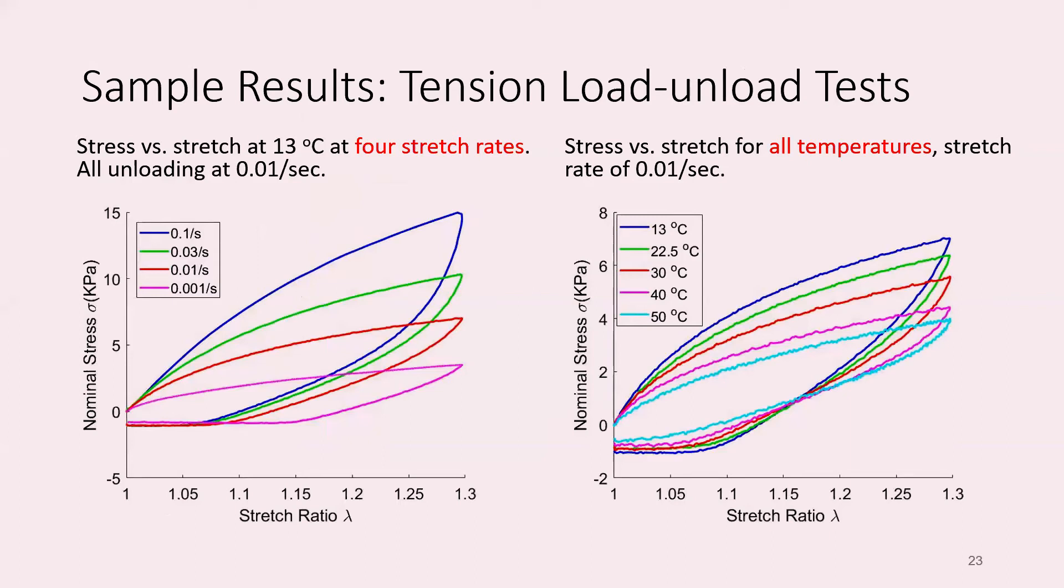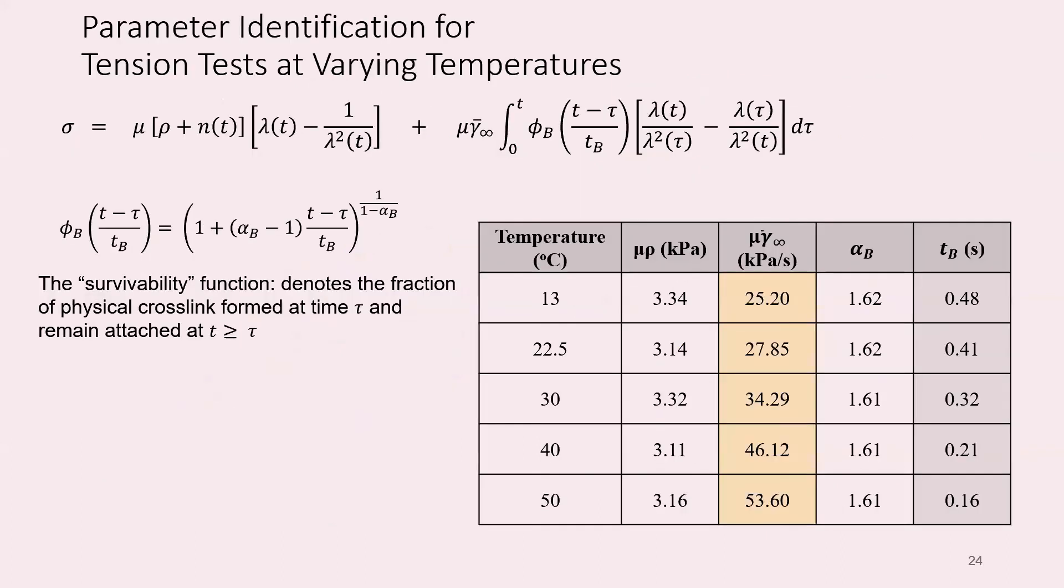On the left, we are holding the temperature constant. At low temperature, you see a high stretch rate, the sample behaves more stiffly. On the right is the same stretch rate but for different temperatures. The lowest temperature is the stiffest. How we model this is we fit our constitutive model to each of these temperatures, then look at the trends of those parameters with respect to temperature. The alpha B term, the breaking rate power law, is pretty constant. The mu rho, the equilibrium modulus, is also pretty much constant with respect to temperature. But what changes is mu gamma bar infinity and T B—those are the terms related to the rate of reforming and rate of bond breaking.